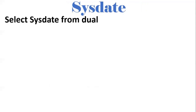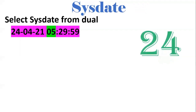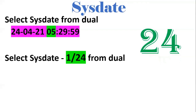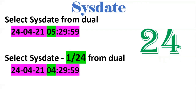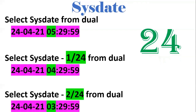Next is SYSDATE. SYSDATE is a pseudo column provided by Oracle. By using SYSDATE we get the current date and timestamp. For example, SELECT SYSDATE FROM DUAL returns the current timestamp, say 05:29:59. In a day there are 24 hours, so if you want to get the last 1 hour of data, you write SYSDATE - 1/24, giving 04:29:59. For the last 2 hours, write SYSDATE - 2/24, giving 03:29:59. This concept will be used to validate the second Swiggy coupon condition.